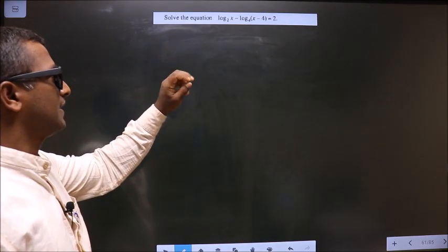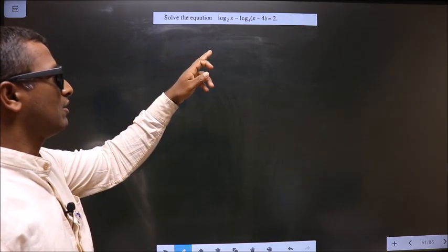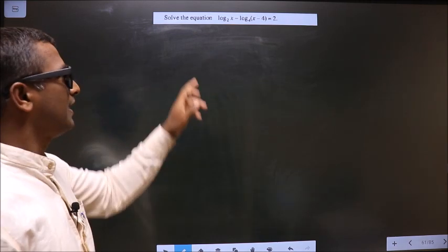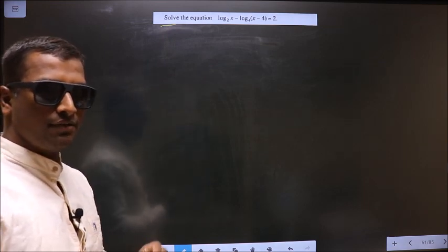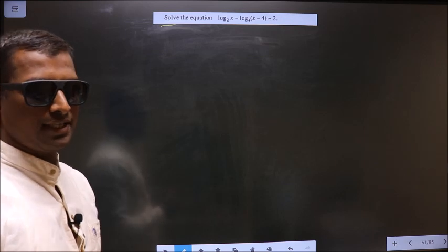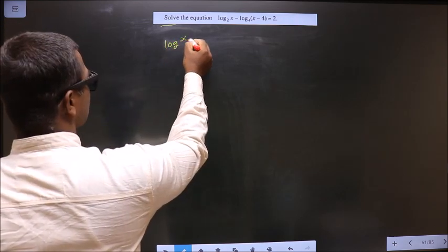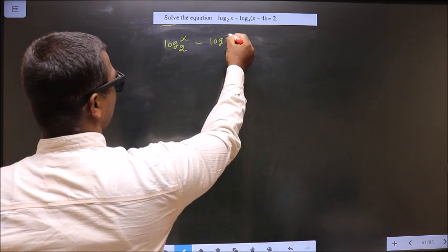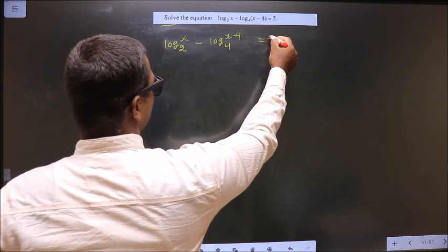Solve the equation: log x base 2 minus log(x minus 4) base 4 equal to 2. Here we are told to solve, meaning we should find the value of x. The given equation is log x base 2 minus log(x minus 4) base 4 equal to 2.